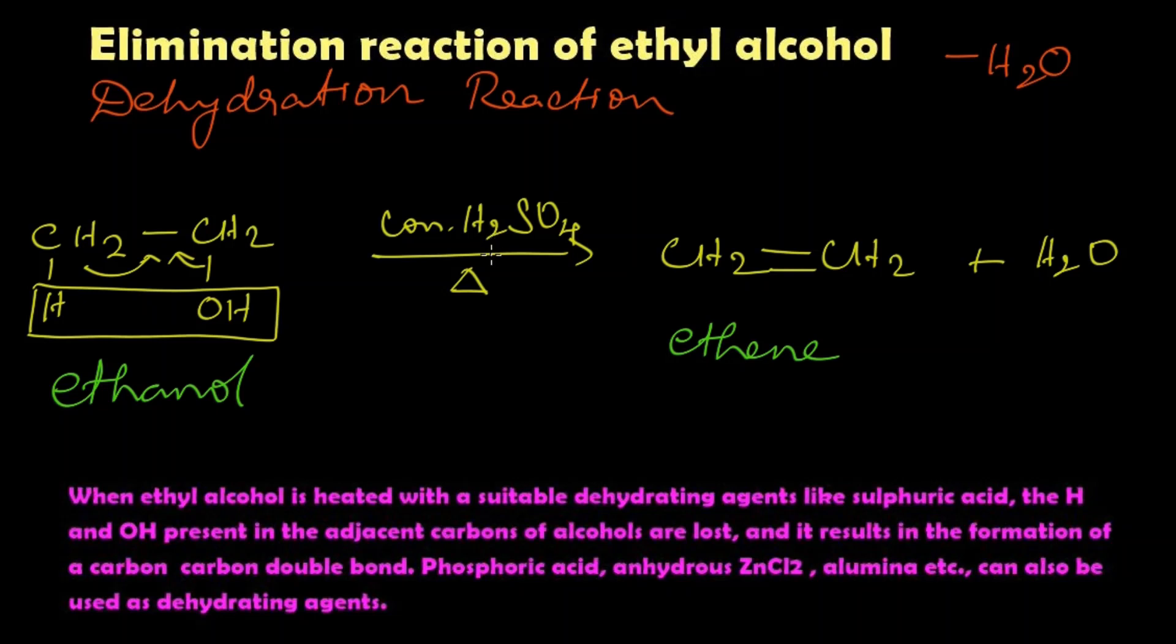When ethyl alcohol is heated with a suitable dehydrating agent - the dehydrating agents may differ, we can use anhydrous zinc chloride, or phosphoric acid, or alumina Al2O3 - the hydrogen and OH present in the adjacent carbons of alcohols are lost as a water molecule.